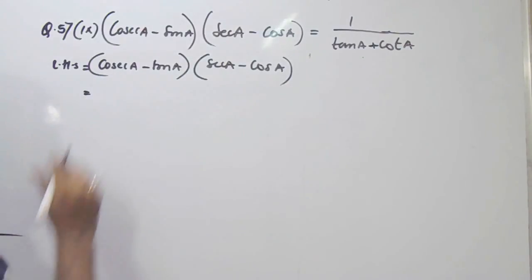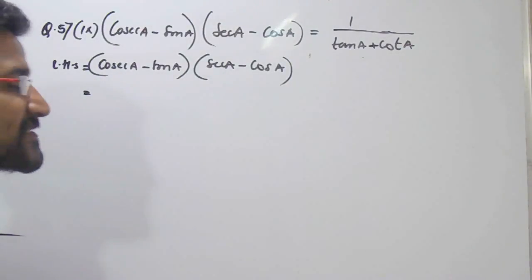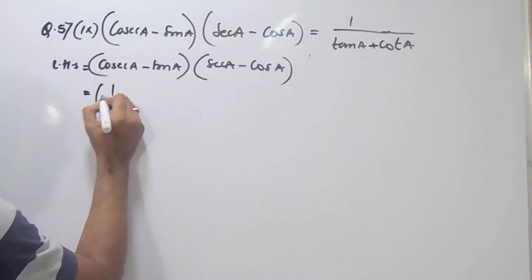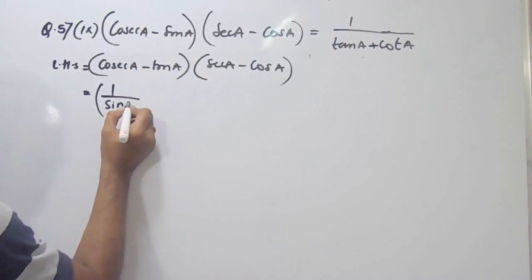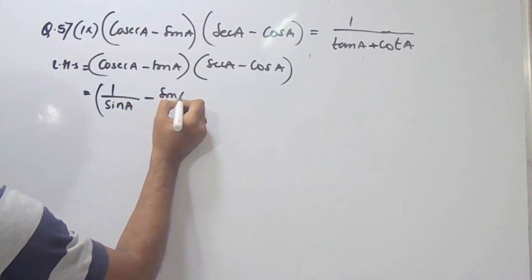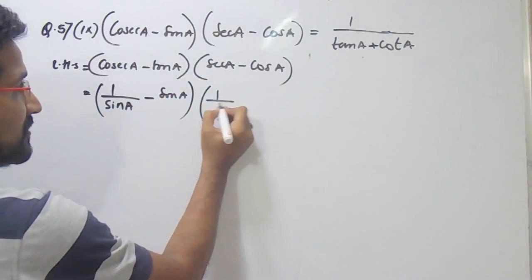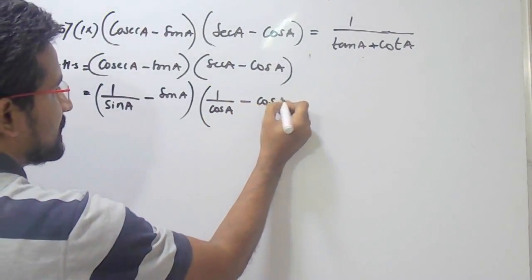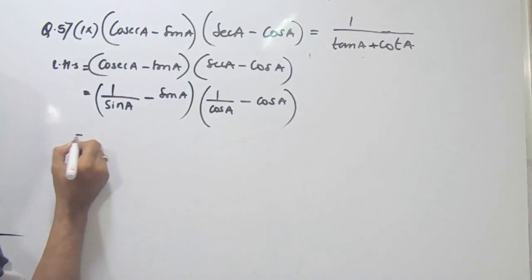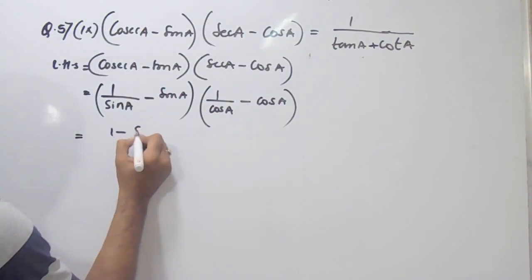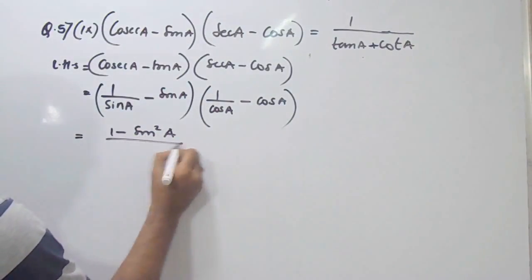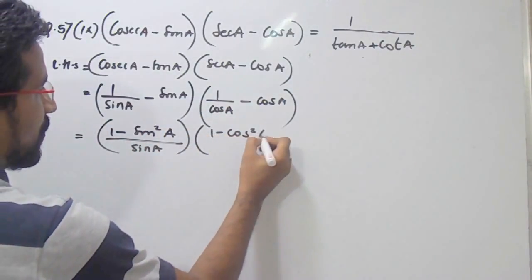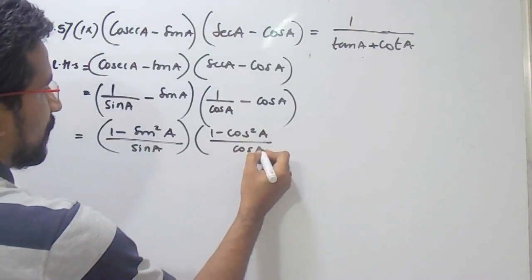So LHS — now we'll write all the terms in terms of sin and cos. So what is cosec? Cosec is nothing but 1 upon sin. So cosec A will be 1 upon sin A minus sin A. Here, sec is 1 upon cos, so in the place of sec we can write 1 upon cos A minus cos A. Now do the cross multiplication, so we'll get 1 minus sin square A divided by sin A, and here we'll get 1 minus cos square A divided by cos A.